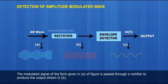The modulated signal of the form given in figure is passed through a rectifier to produce the output shown in B.